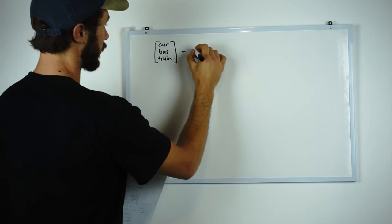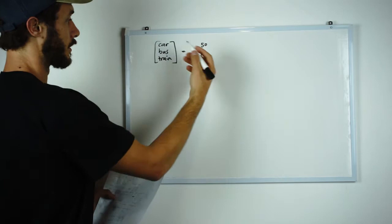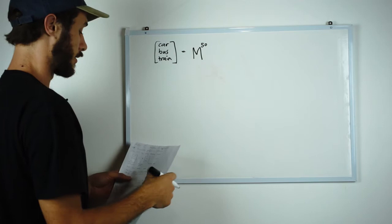This is equal to our transition matrix M and we want to put this to the power of 50 or any arbitrary large number that ensures that this matrix converges. We do a check later on to ensure that it does converge but really it can be any large arbitrary number.